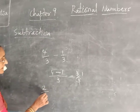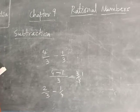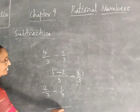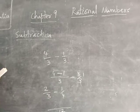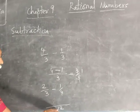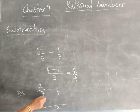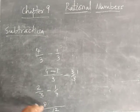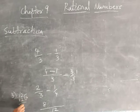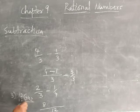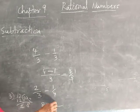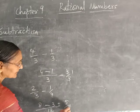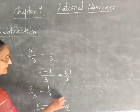Suppose the denominators are different. Then you have to take LCM. For 3 and 4, LCM is 12 — multiply them since no common factor. Divide LCM by denominator: 12 by 3 gives 4, then 4 into 2 is 8. Then 12 by 4 gives 3, then 3 into 1 is 3. So it comes to 5 by 12, because 8 minus 3 equals 5. So the answer is 5 by 12.